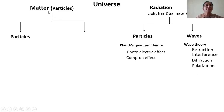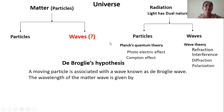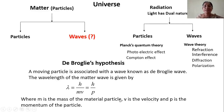Now let us look at matter. Matter is made up of particles, so matter has particle nature. We also know nature loves symmetry. When the universe is made of matter and radiation, and radiation has dual nature, surely matter also must have dual nature. Because nature loves symmetry, De Broglie assumed and predicted that matter made up of particles must also have a wave nature. A moving particle is associated with a wave known as the De Broglie wave. The wavelength of matter wave is given by lambda equal to h by mv, or it is equal to h by momentum p, where m is the mass, v is the velocity, and p is the momentum of the particle.